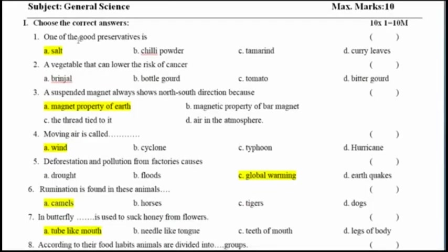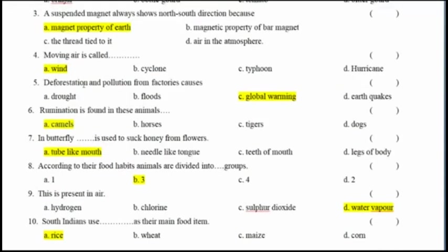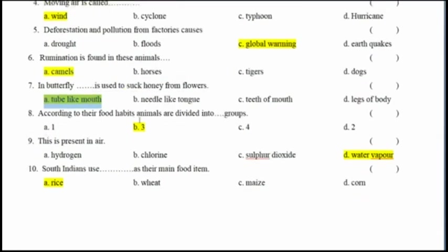Now we will see Part B. One of the good preservatives is salt. Moving air is called wind. Deforestation and pollution from factories causes global warming. Lumination is found in the camel. In a butterfly, a tube-like mouth is used to suck honey from flowers. According to their food habit, animals are divided into three groups: herbivores, carnivores, and omnivores. Water vapour is present in air. South Indians use rice as their main food item.